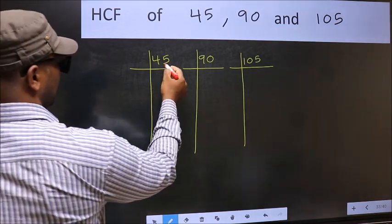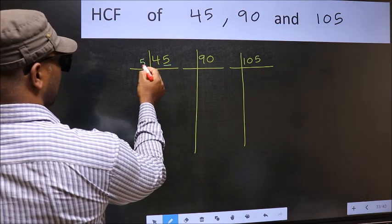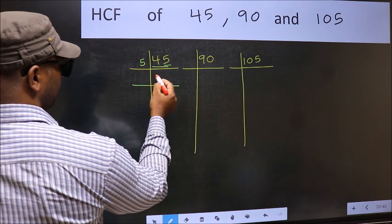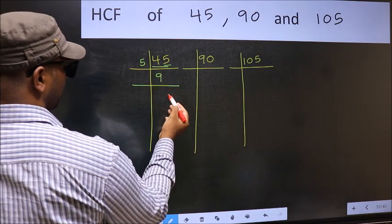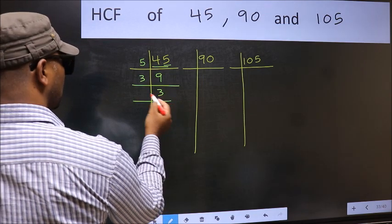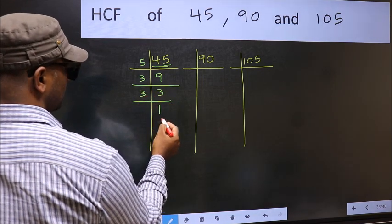Next, here last digit 5, so take 5. 45, when do we get 45 in 5 table? 5 nines, 45. Now 9 is, 3 threes is 9. Now 3 is a prime number, so 3 ones 3.